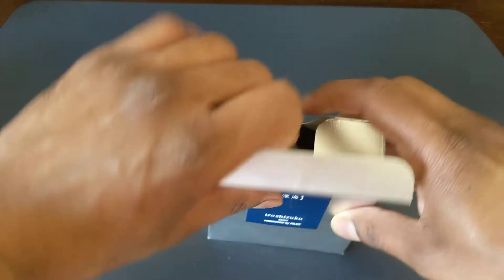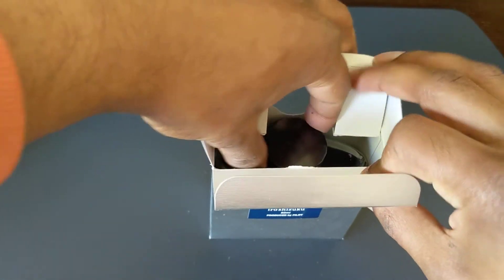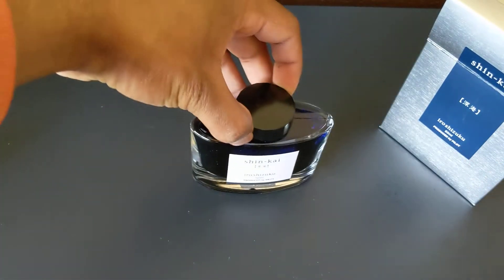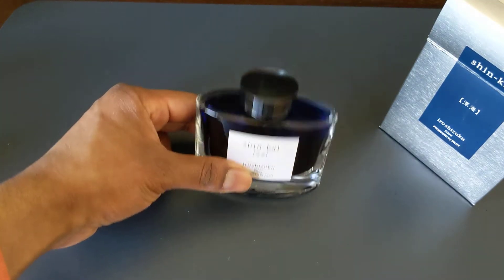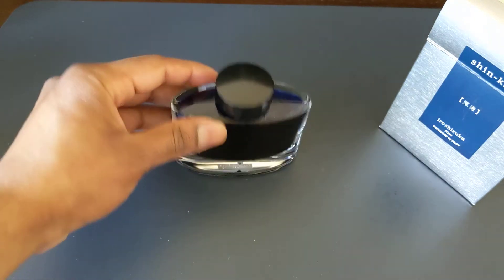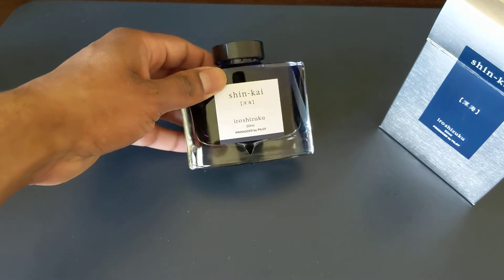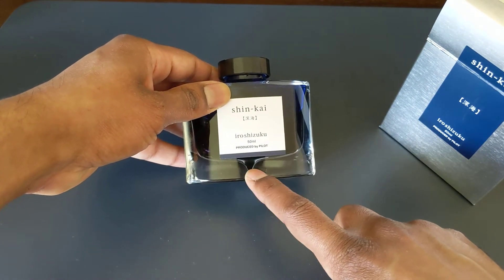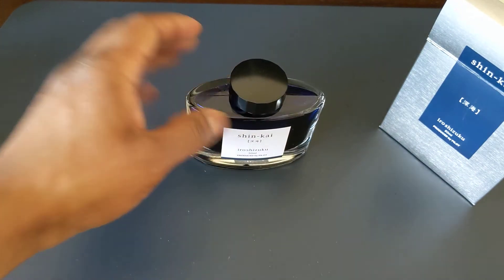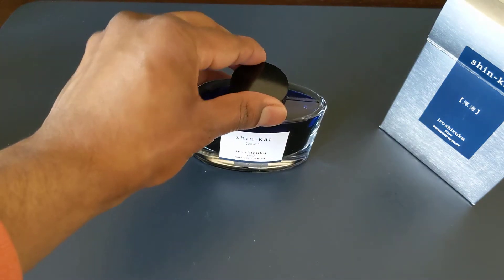Next let's talk about Pilot Oro Shizuku. Much like the Pelican Edelstein inks, I think this is a really good looking bottle. I don't really love the design, but as you can see they have this little dip down here, so when the ink level is running low you can actually get your nib in a little bit further to get more ink out, which is a nice design.